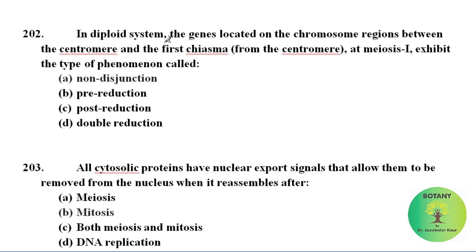In a diploid system, the genes located on the chromosome regions between the centromere and the first chiasma from the centromere at meiosis first exhibit a type of phenomena called non-disjunction.